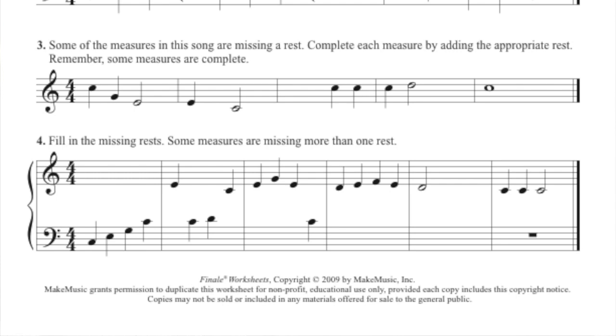For instance, in the first measure we see notes in the bass clef but we don't see any notes in the treble clef. So if there are no notes present in the treble clef, then there needs to be a rest in that measure. Since there are no notes in that treble clef, we would put a whole note rest for that first measure.